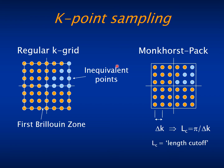Monkhorst and Pack noticed that if you displace the grid points relative to the origin, the degeneracy of the points increases and you need fewer points in the irreducible part. In any case, the accuracy of this integration is characterized by the fineness of the grid, as in real space, and so by the separation between the grid points.